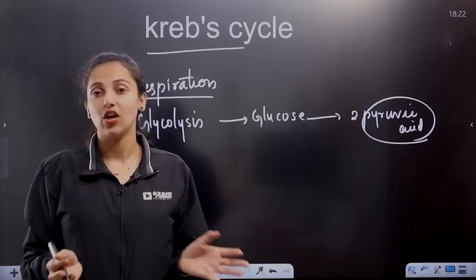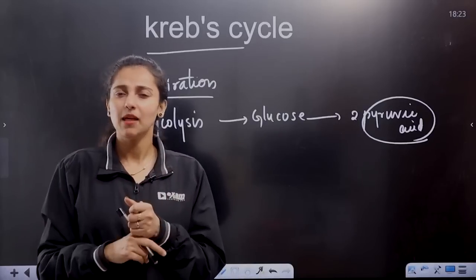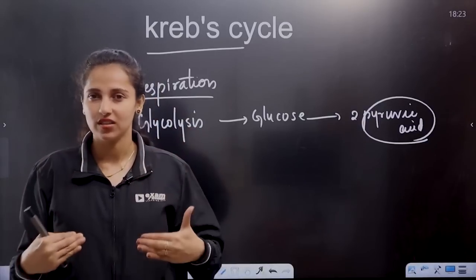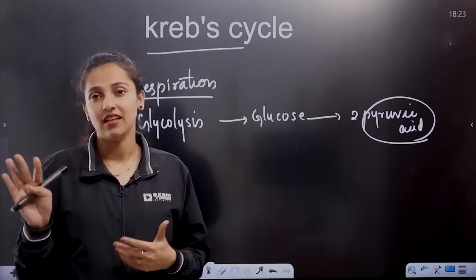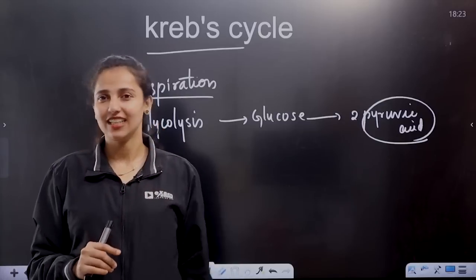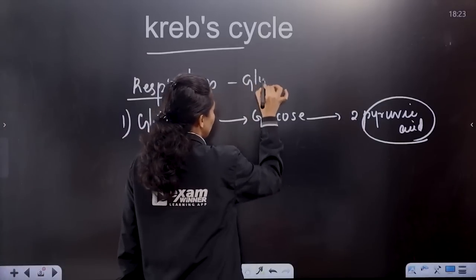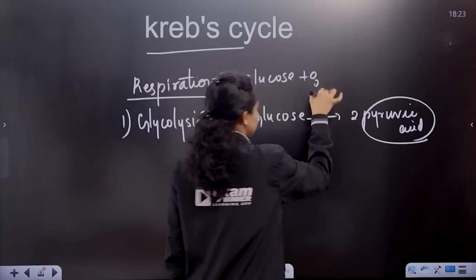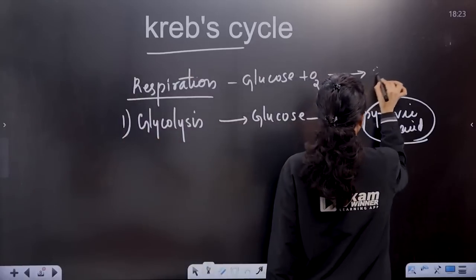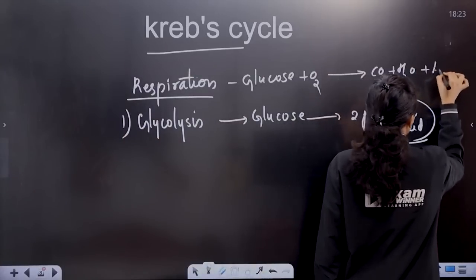Pyruvic acid undergoes complete oxidation. When we break down glucose, we take in oxygen during respiration and release carbon dioxide, water, plus energy. So: glucose plus oxygen gives carbon dioxide, water, plus energy.